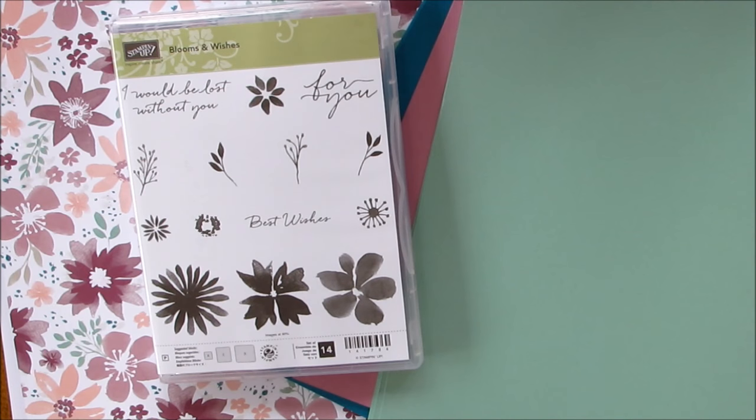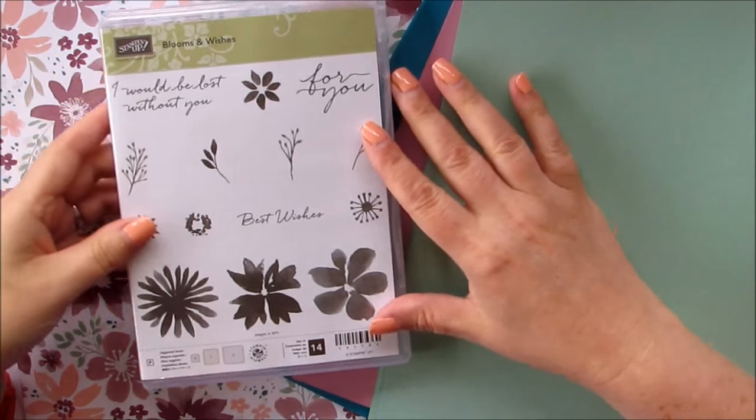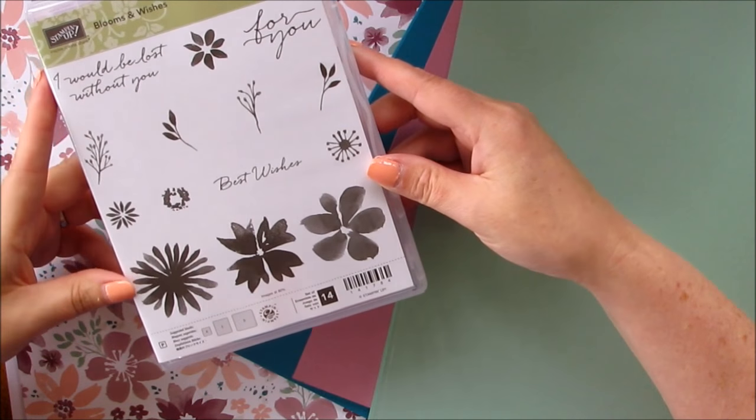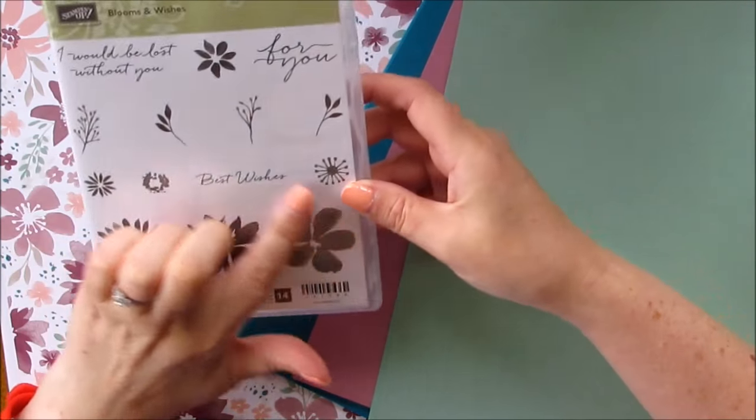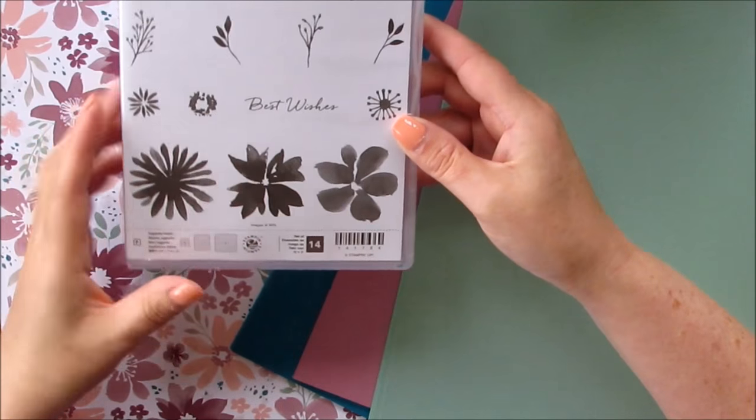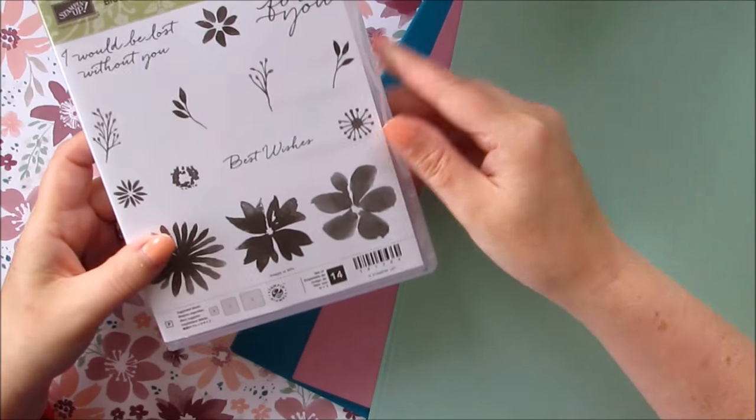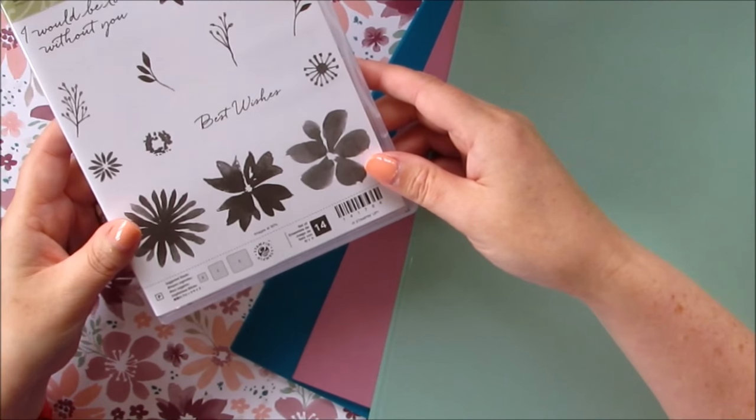Hello, it's Rachel from Carole and Cream. Today I wanted to show you this gorgeous suite that's in our new brochure called Blooms and Bliss. It has this lovely stamp set called Blooms and Wishes. When you stamp these flowers they actually look like a watercolor effect, lovely little sentiments with it.